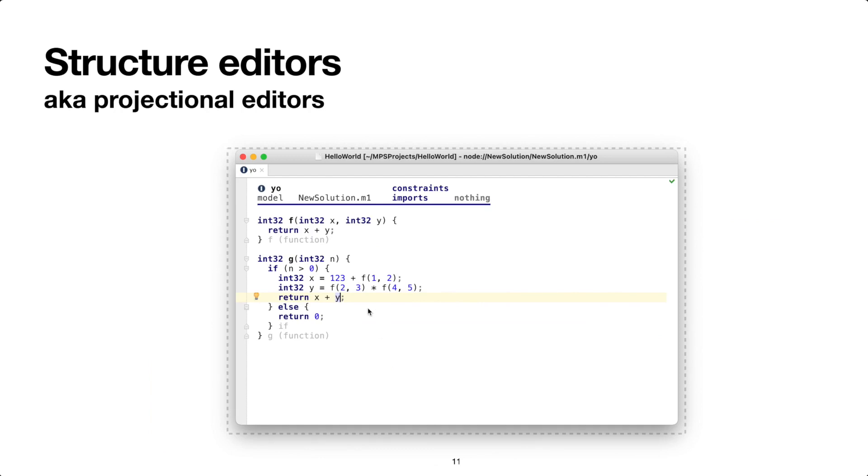So JetBrains MPS is the state-of-the-art in expert-level efficient structure editing, and even some professional programmers use it on a daily basis. It features this text-like interface. I can type left-to-right to construct operator sequences. And I can even enter parentheses one at a time.